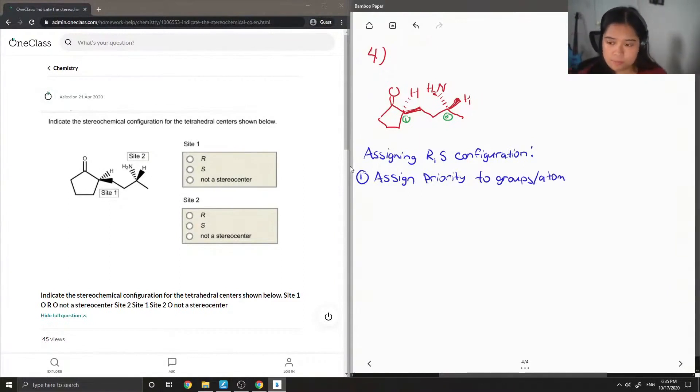Basically, this is mainly based on molecular weight. And then if you have a least priority, this is going to be in the vertical position. And then you're just going to count the priority numbers and see what direction the priority is going.